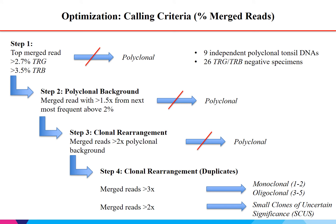One of the most challenging parts was setting the calling criteria based on percentages of merged reads. The first step was to set a threshold above which clonality is considered: for TRG, the highest merged read had to be greater than 2.7%, and for TRB greater than 3.5%; otherwise the sample was called polyclonal. This was based on independent running of polyclonal tonsil DNA and at least 26 samples that were paired TRG and TRB negative. The next step was to establish the polyclonal background, requiring merged reads to be at least 1.5x higher than the next most frequent reads above 2%. If no merged read ratio was greater than 1.5%, the sample was called polyclonal.